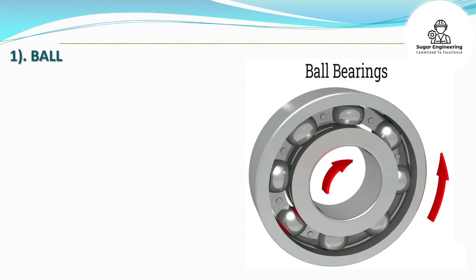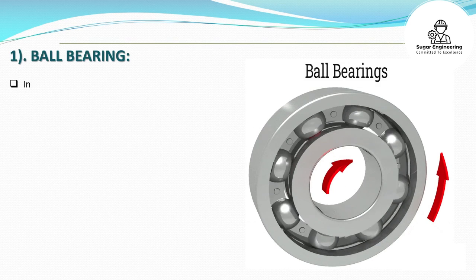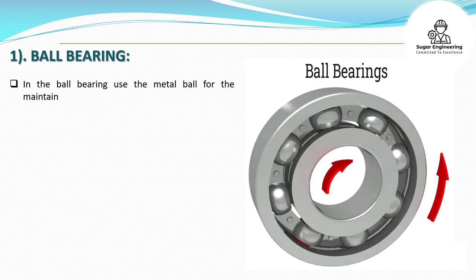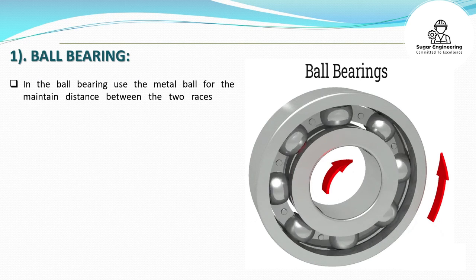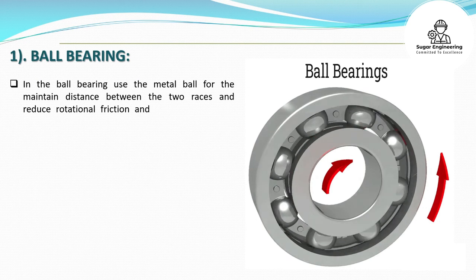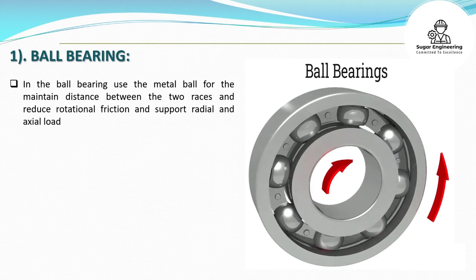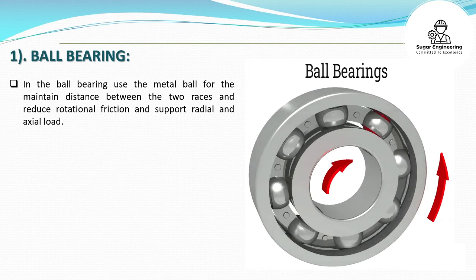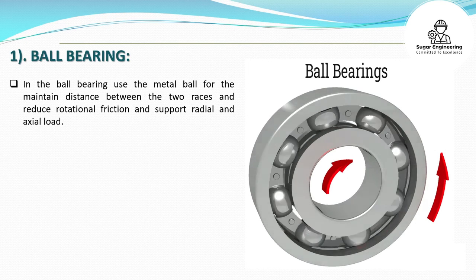Ball bearings use metal balls to maintain the distance between two races, reducing rotational friction and supporting both radial and axial loads.